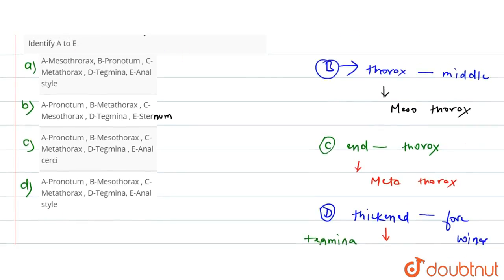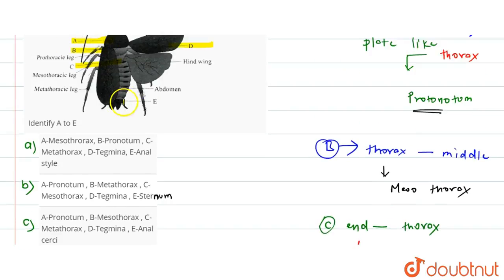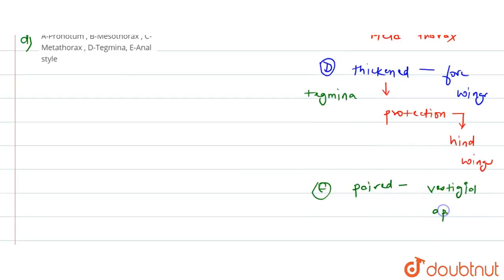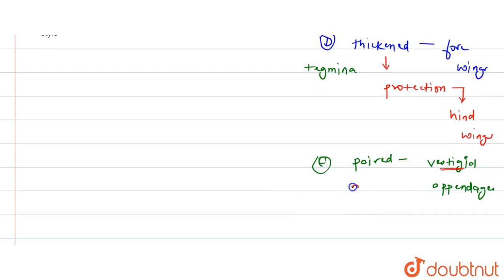If we check the last labeling, we can see that the last segment has two pairs attached, which is called E. These are paired vestigial appendages. Vestigial means rudimentary, with no specific function. We call them anal cerci, and these are attached to the last segment.